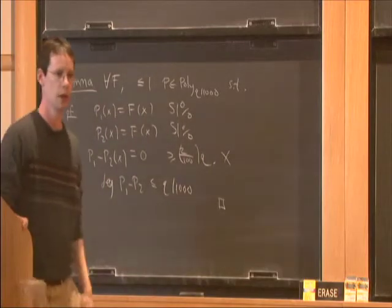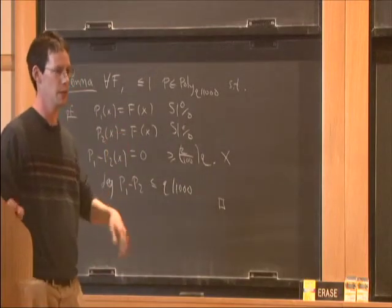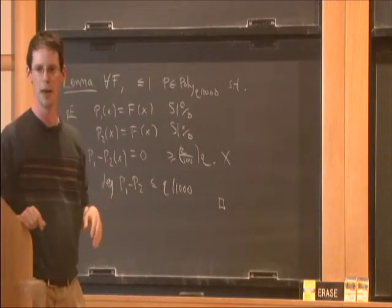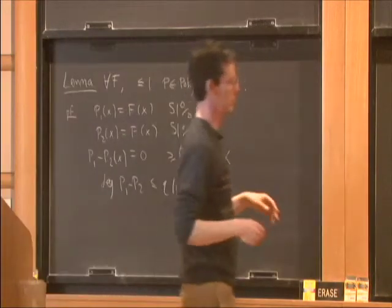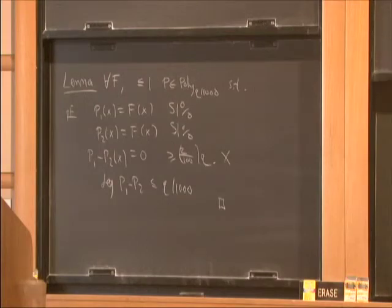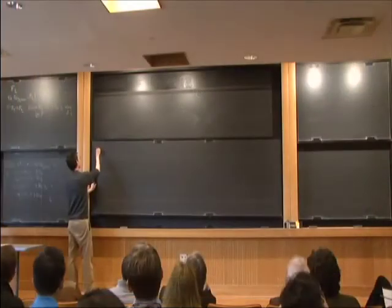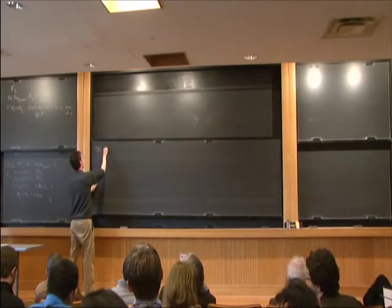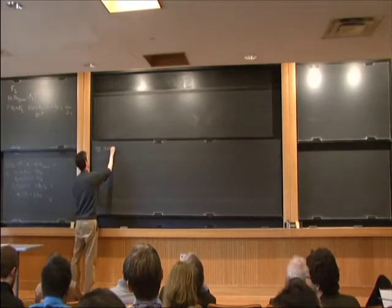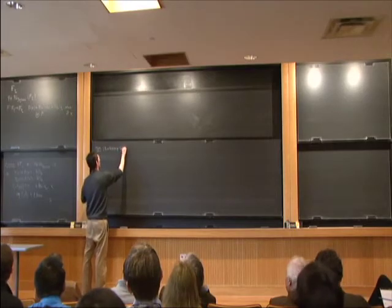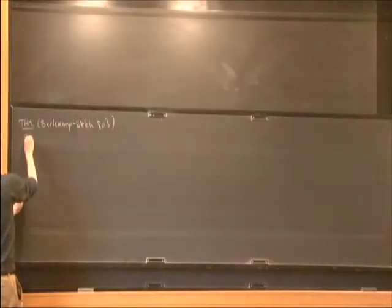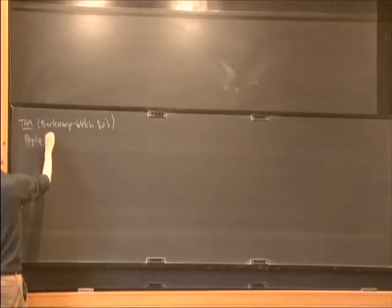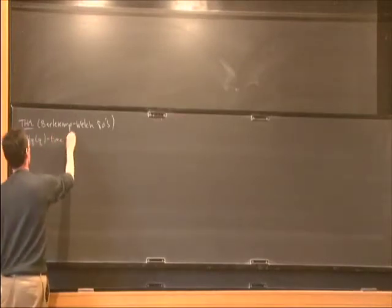So the information isn't really lost, but this lemma doesn't tell us how to find it. We could try all of the polynomials one at a time, but this would take a ridiculously long time. The cool thing is that there is a good way to find it. Berlekamp and Welch in the 80s gave a polynomial time algorithm to find p.